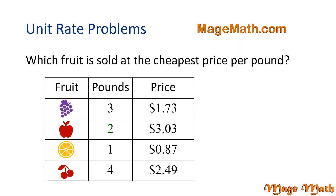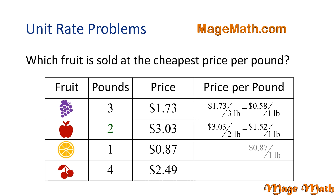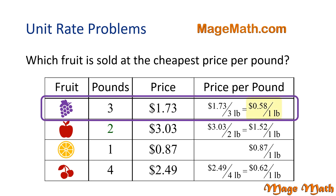Which fruit is sold at the cheapest price per pound? We need to find the unit price, or the price per pound, by dividing the price by the number of pounds. For grapes, $1.73 divided by three pounds is 58 cents per pound. For apples, $3.03 divided by two pounds equals $1.52 per pound. For oranges, we already have the unit price: 87 cents per pound. For cherries, $2.49 divided by four pounds gives us 62 cents per pound. Looking at the price per pound, we can see that grapes have the lowest price, so they are the fruit sold at the cheapest price per pound. Nice job.